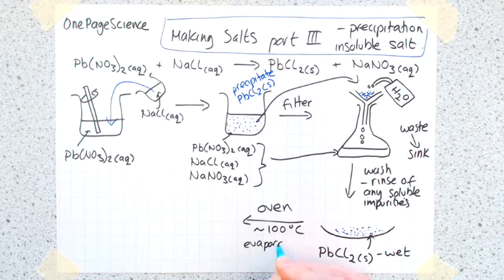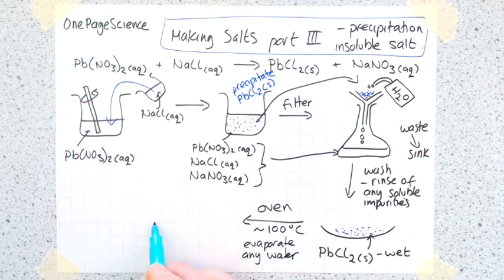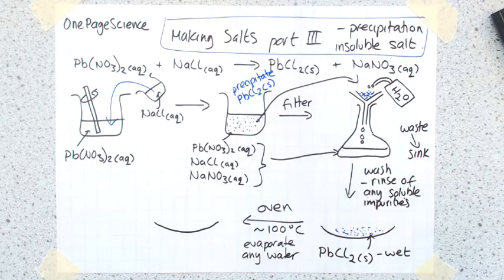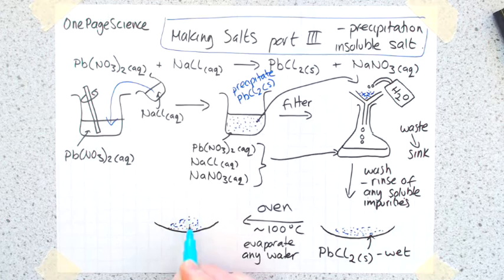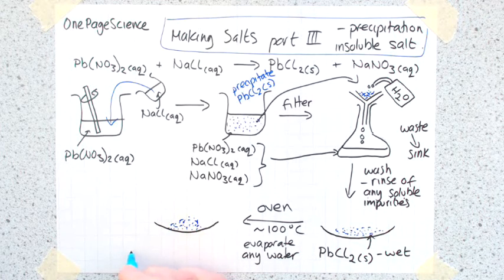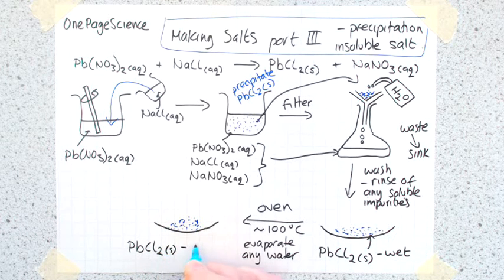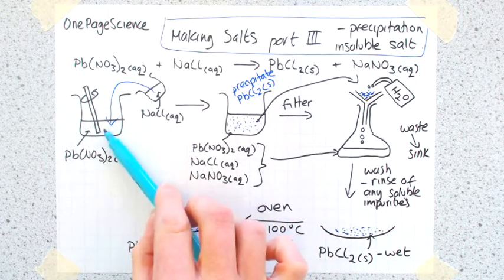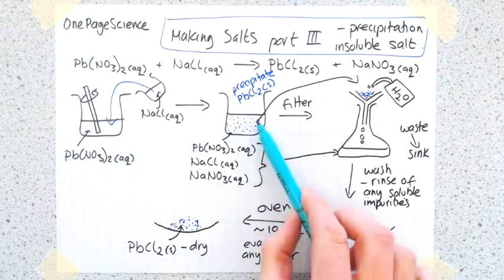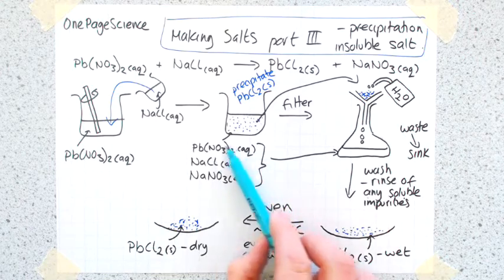That's going to evaporate any water, and what you're left with is a nice dry sample. Over here is your lead chloride as a solid, this time it is dry. So quick recap: you add the two solutions together, stir them around, and end up with a precipitate.